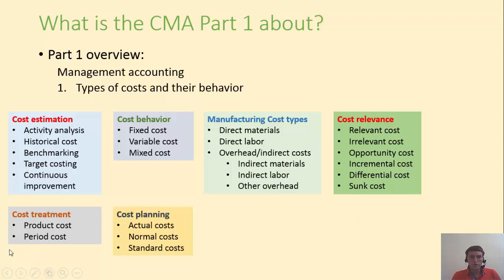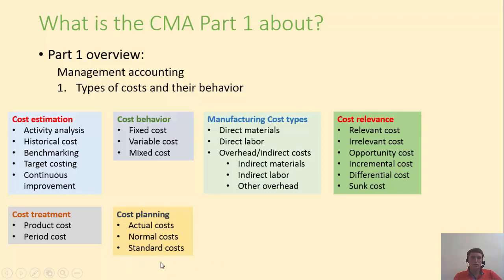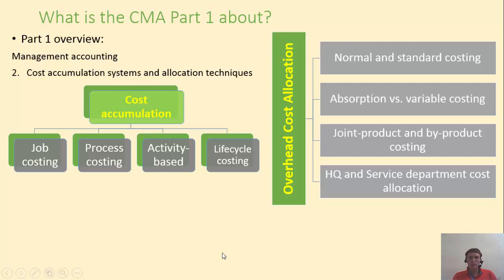We're going to discuss how to treat a cost: whether to treat it as a product cost and capitalize it, or treat it as a period cost and expense it. We'll also talk about the importance of costs for planning, discussing actual, normal, and standard costs. Then, after understanding the basic terminology and classes of costs, we're going to talk about cost accumulation and allocation.